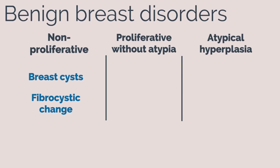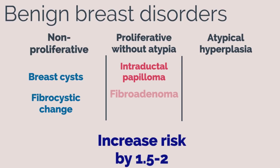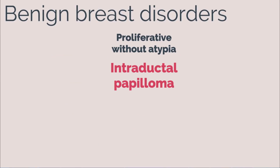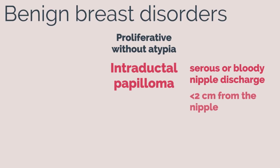Proliferative without atypia disorders increase the risk of developing breast cancer by 1.5 to 2 times. They include intraductal papilloma, fibroadenoma, and usual ductal hyperplasia. Intraductal papillomas typically present with serous or bloody nipple discharge. They are most commonly found less than 2 centimeters from the nipple.